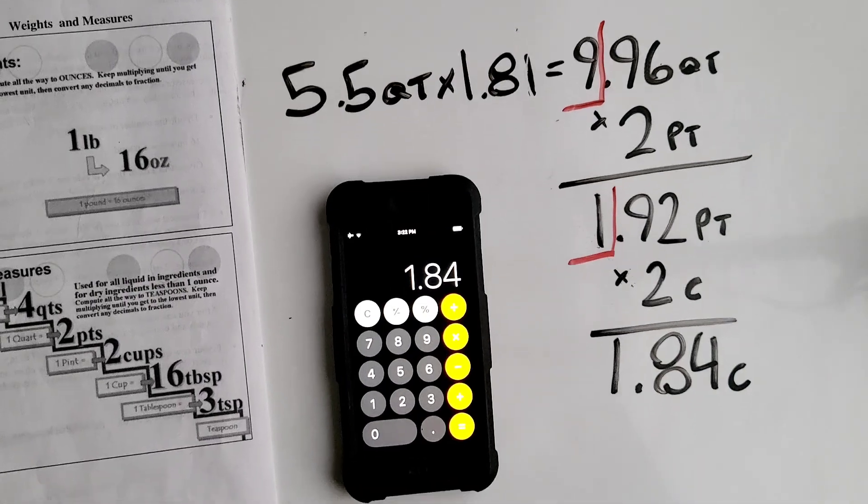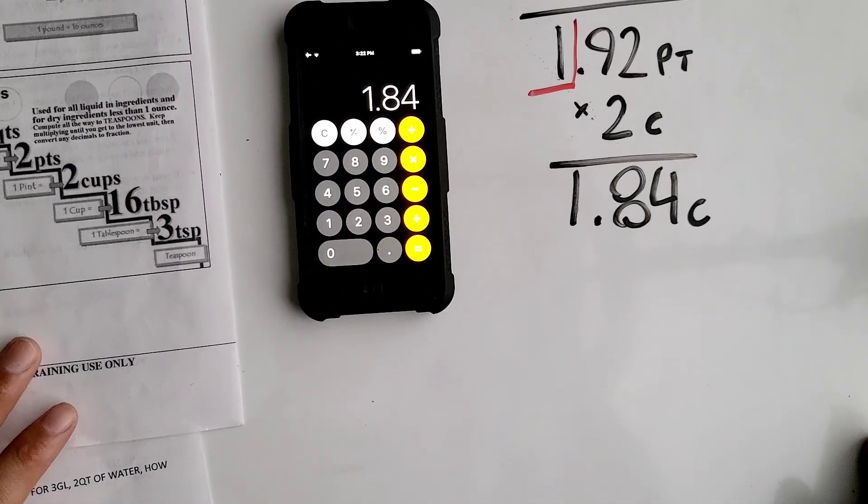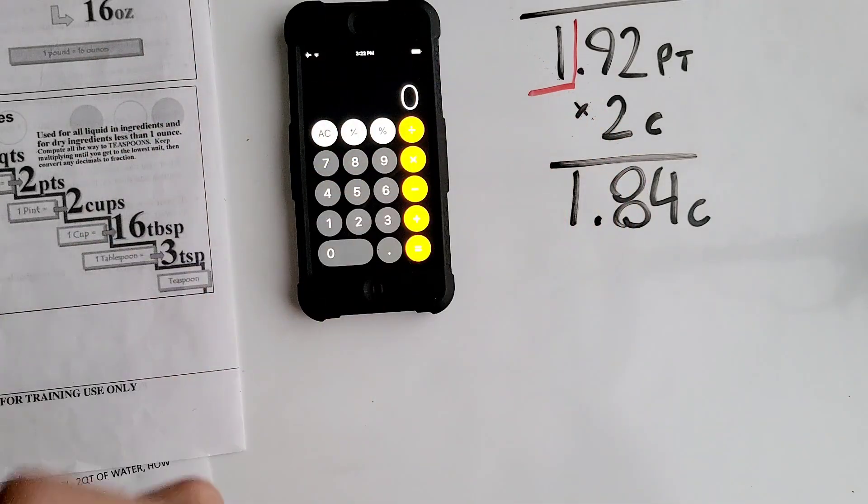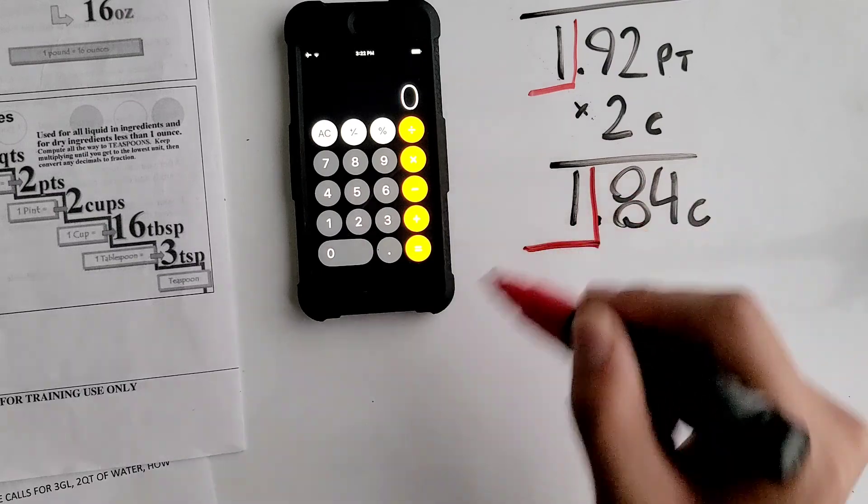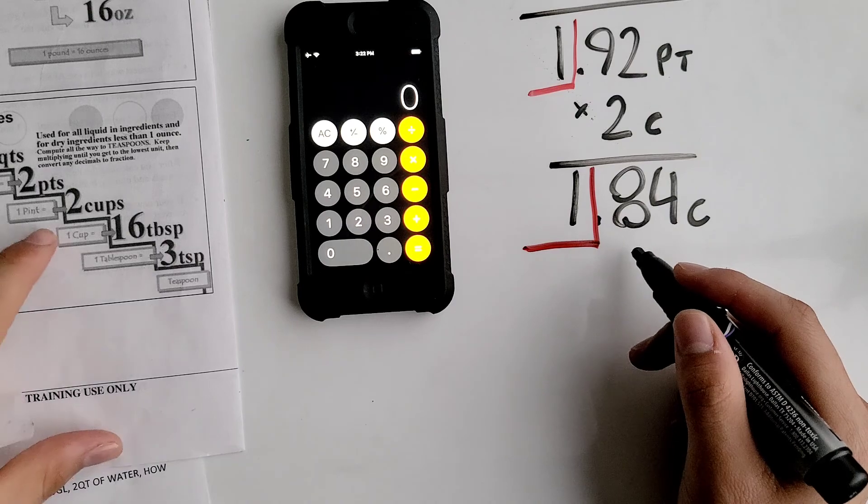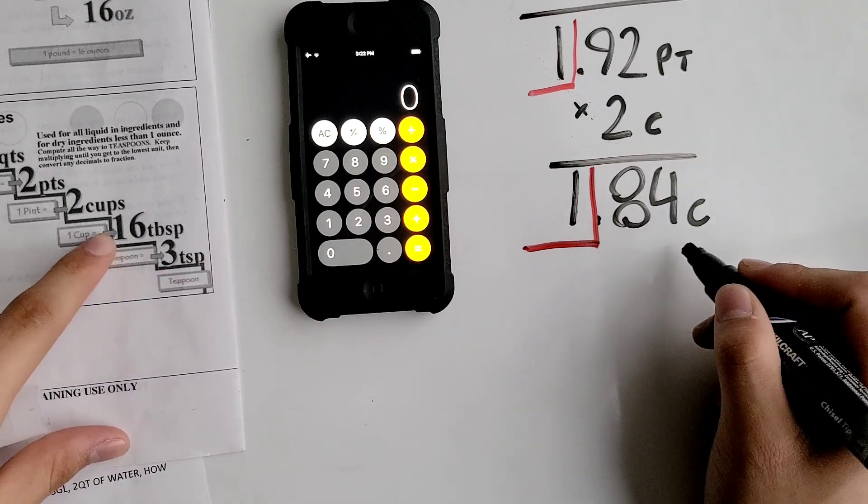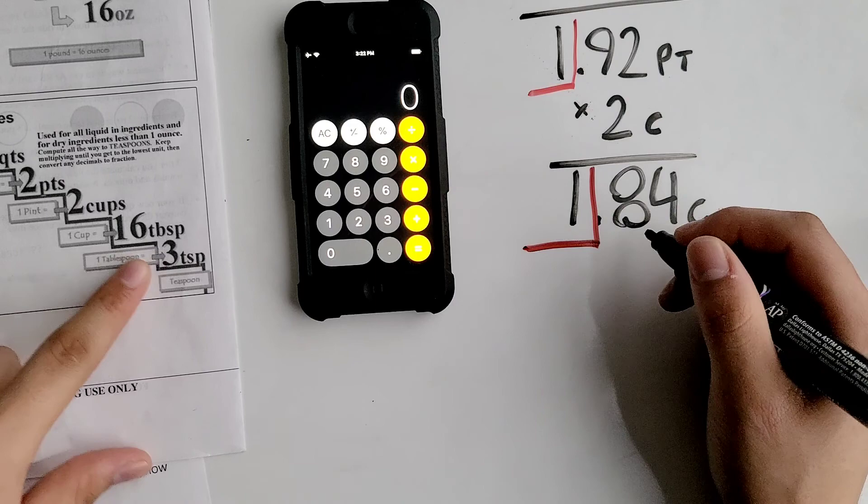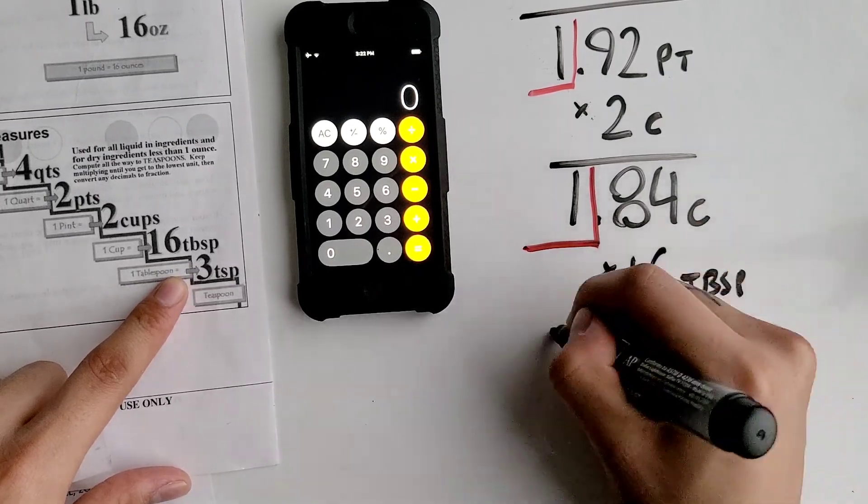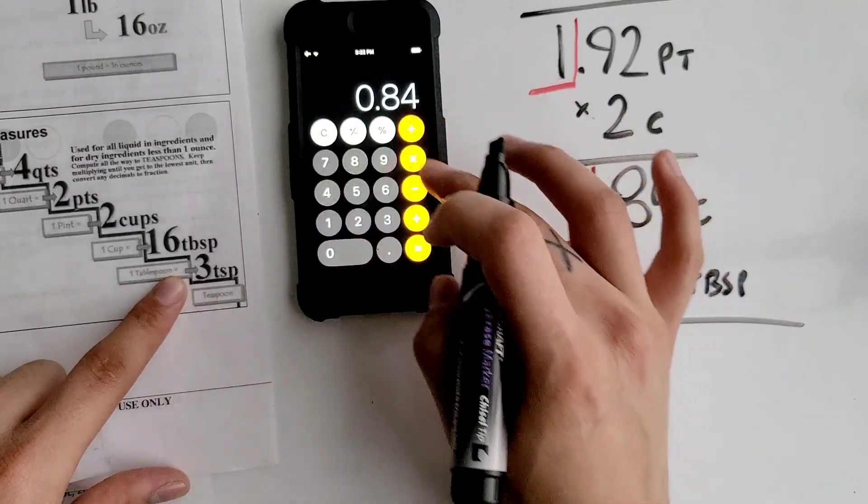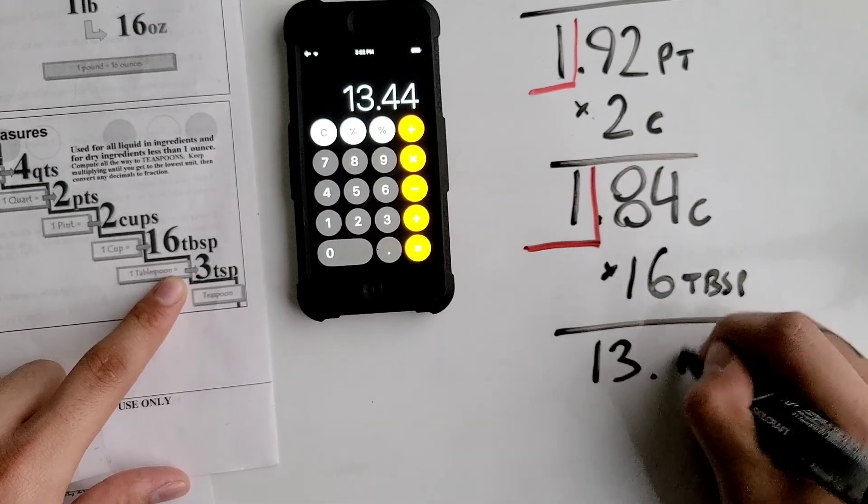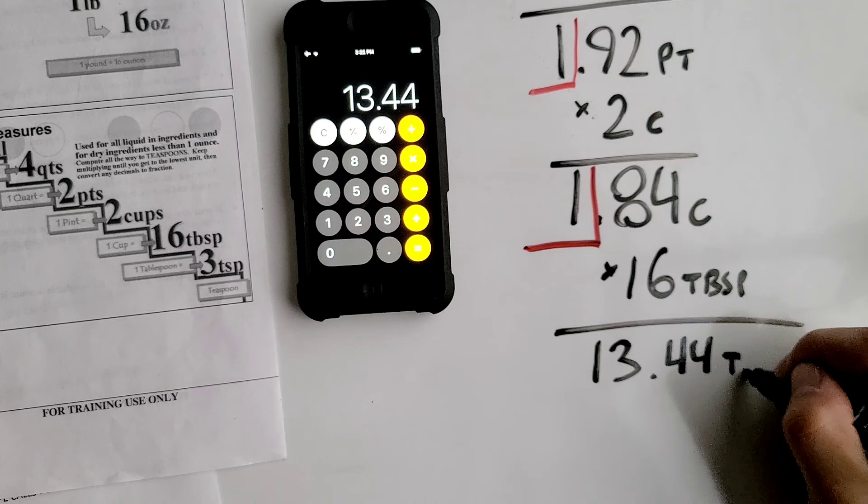Now we have to continue to go down until we get to our lowest unit, which is teaspoons. Block off your whole number and multiply the remainder by the unit under it. So 0.84 cups, we're going to have to multiply it by 16 tablespoons. So 0.84 times 16 equals 13.44 tablespoons.